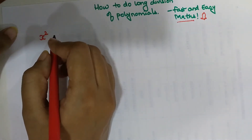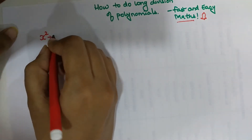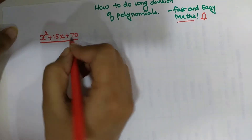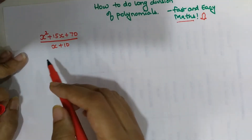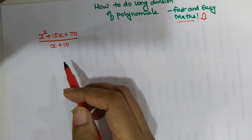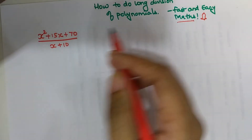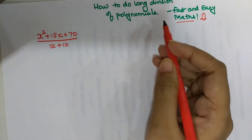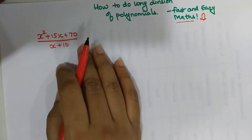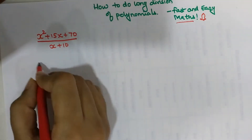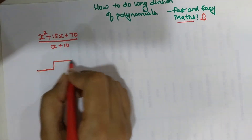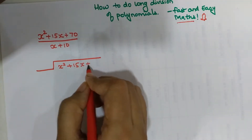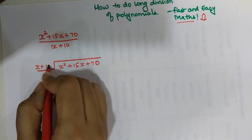Let's take for example x squared plus 15x plus 70, and you have to divide it by x plus 10. In my teaching career I have found that most students make a lot of mistakes in this long division method. Today I am going to show you step by step how to do this, so that you don't go wrong. We start by writing the numerator as the dividend and the denominator as the divisor.